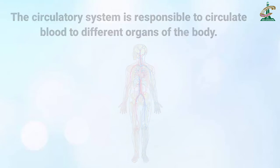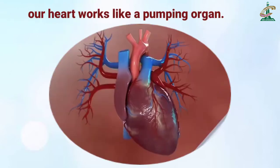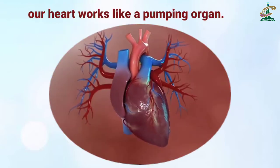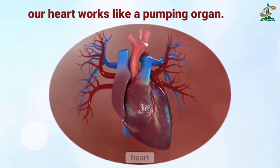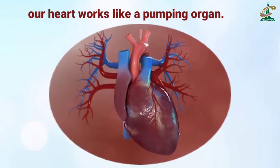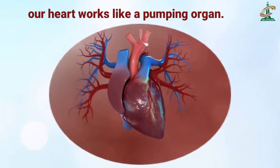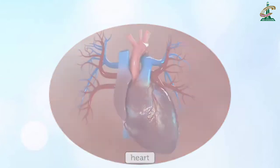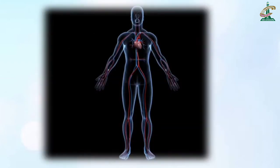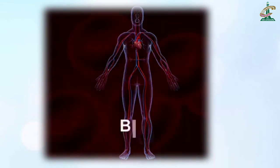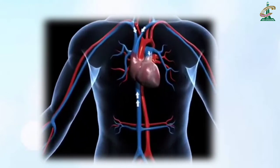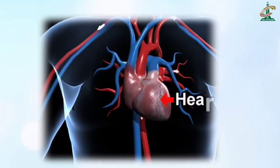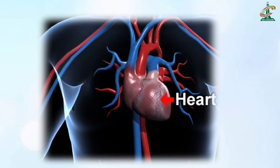हमारा circulatory system हमारी body के different organs तक blood पहुँचाता है. हमारा heart pumping organ की तरह blood को pump करता है. जब हम सांस लेते हैं, उससे हमारे blood में oxygen आ जाती है, तो oxygenated blood को दूसरे parts तक हमारा heart पहुँचाता है.